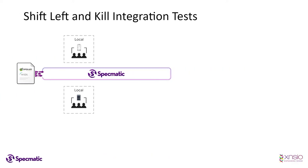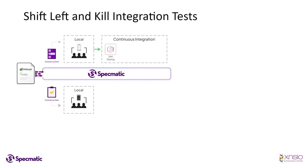Now that we've seen how Specmatic helps you leverage API specifications as a stub on the consumer side and contract tests on the provider side on your local environment, let's look at how it pans out in the CI. For the consumer, once the unit tests are done, for component testing we can leverage the same Specmatic contract as stub server that we were using on the local machine.